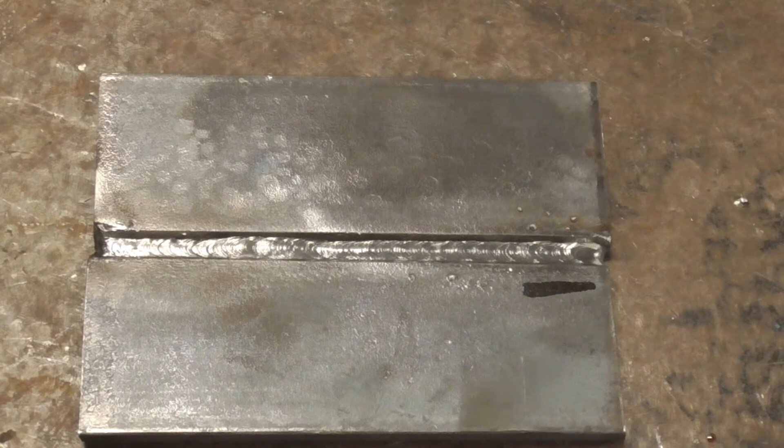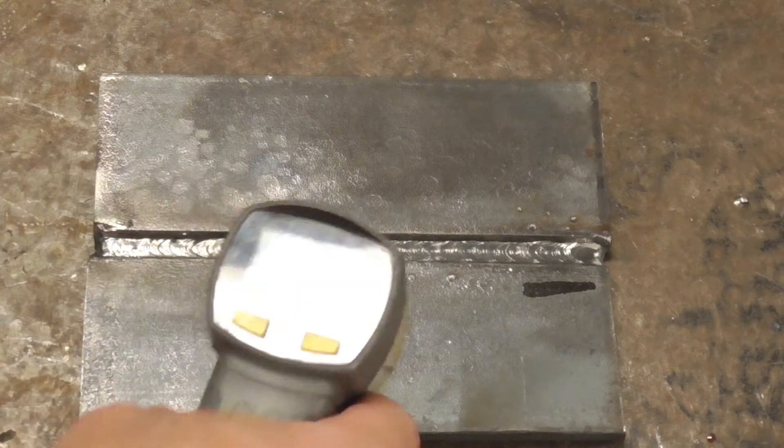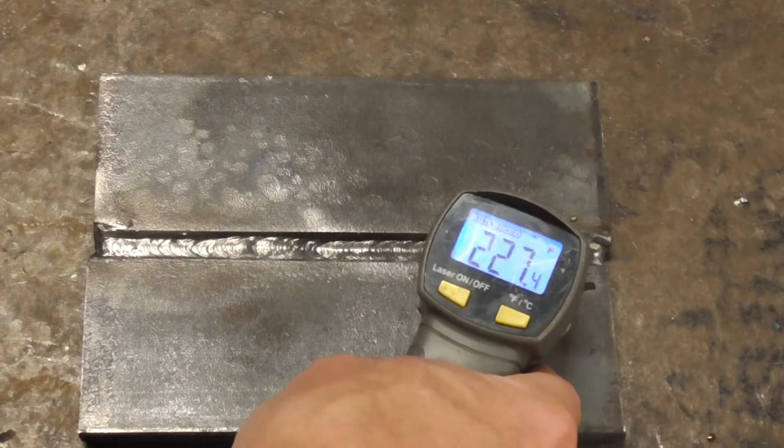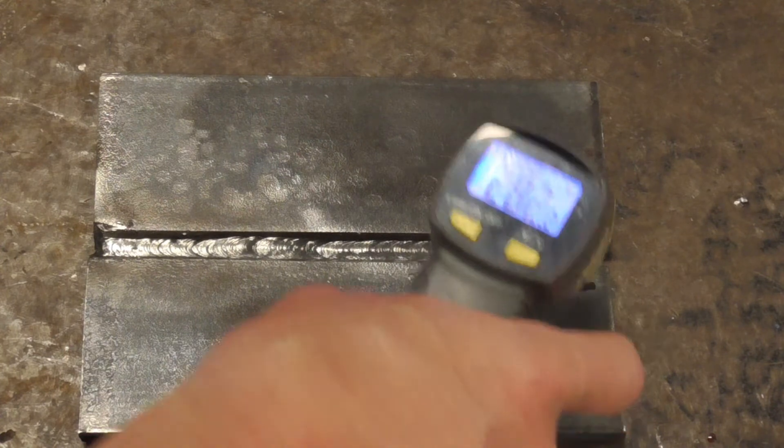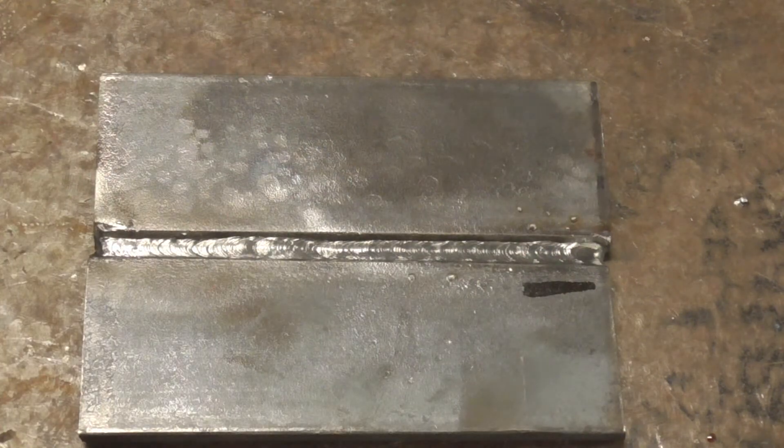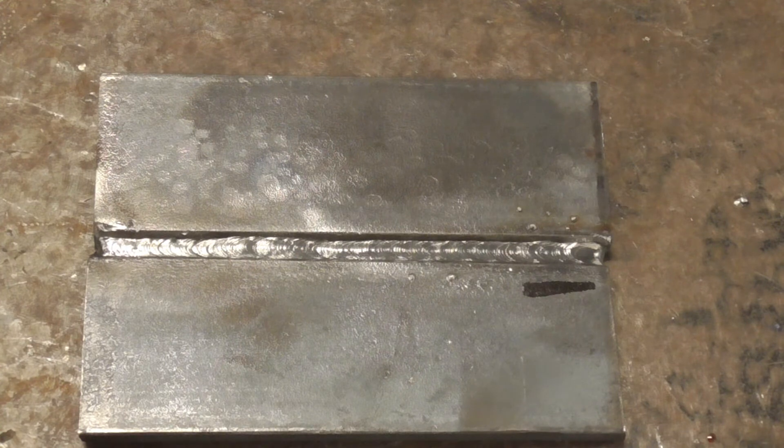See how it's liquid? That means it's too hot. So what I'm going to do now, just for curiosity, is hit it with the gun. 280, 290. So I'm going to give it 5 minutes, come back, we'll hit the temp stick again. And if it's good, we'll put the next pass on. If not, we'll wait.